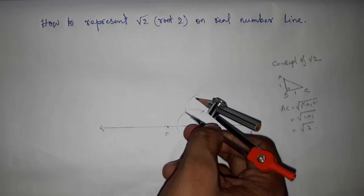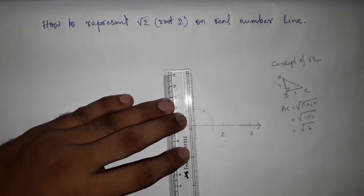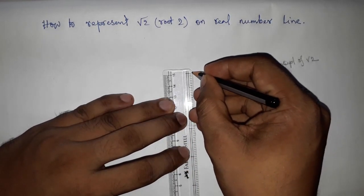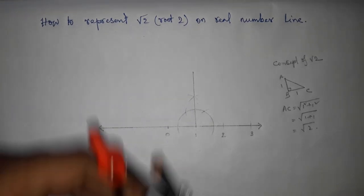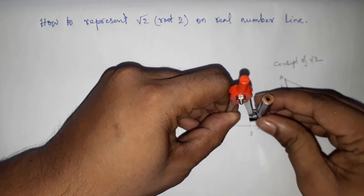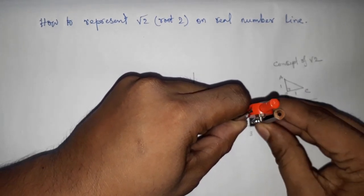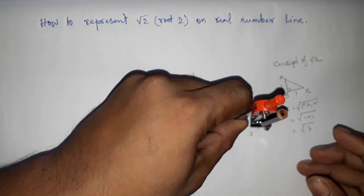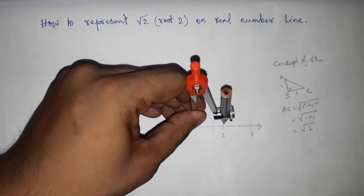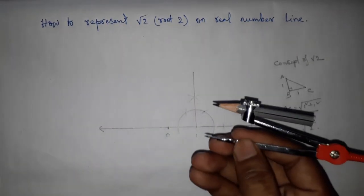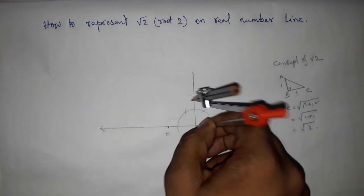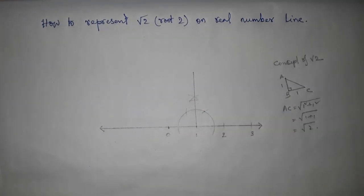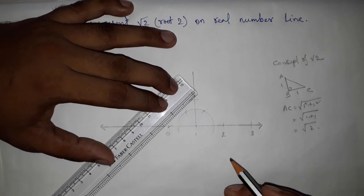So now I am drawing 90 degrees here. Now taking the measure between two numbers by compass. All are same. Now putting here and cutting here.